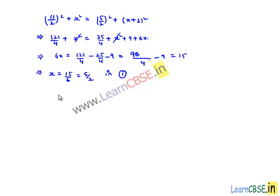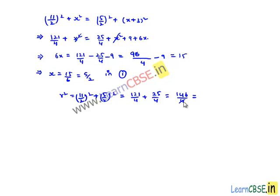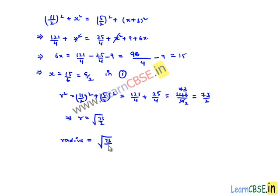Substituting x = 5/2 in equation number 1: r² = (11/2)² + (5/2)² = 121/4 + 25/4 = 146/4 = 73/2. Therefore r equals √(73/2) cm. The radius of the given circle is √(73/2) cm. Thank you.